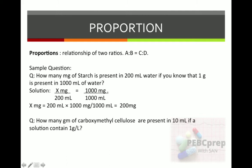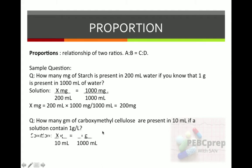Please pay special attention to the unit in which you need to answer in the exam. Another example: how many grams of carboxymethyl cellulose are present in 10 ml if a solution contains 1 gram per liter? One liter equals 1000 ml. So: X g over 10 ml = 1 g over 1000 ml. X = 10 × 1 ÷ 1000 = 0.01 grams.